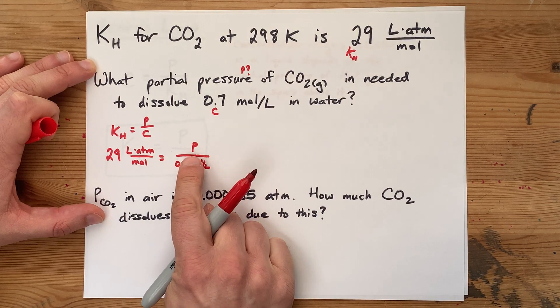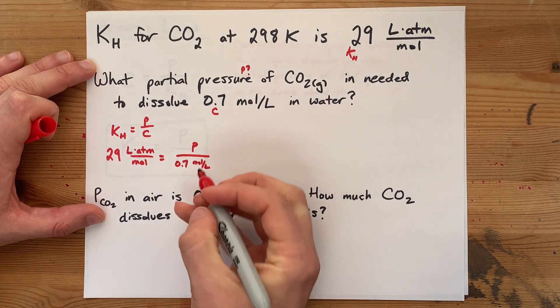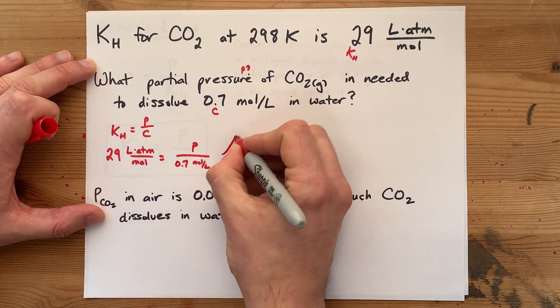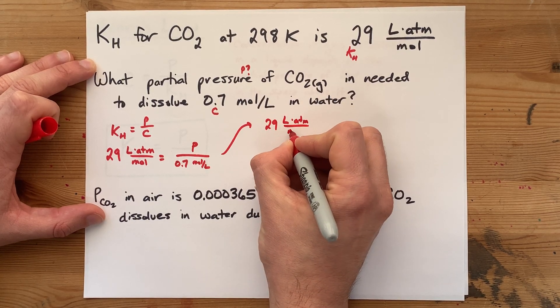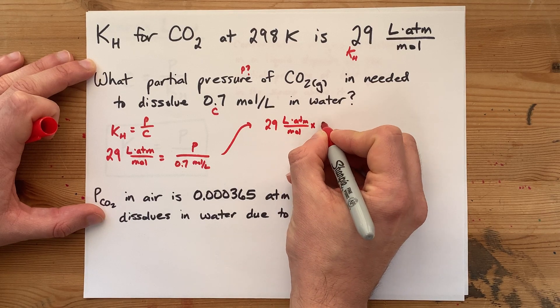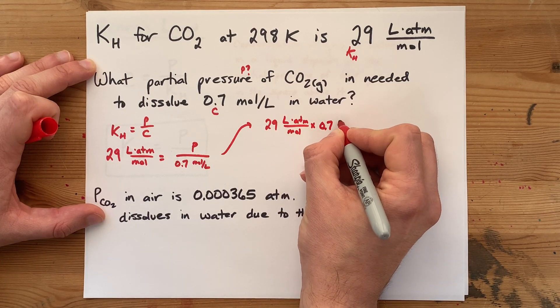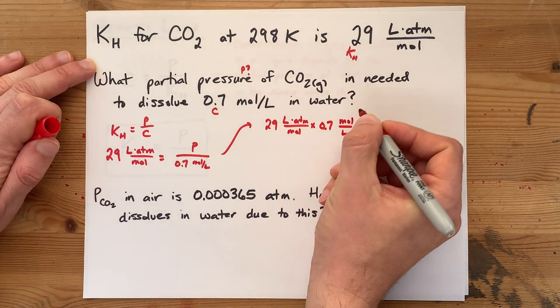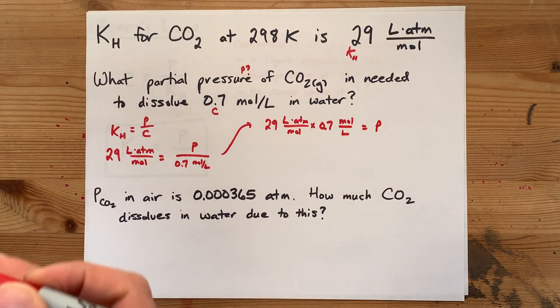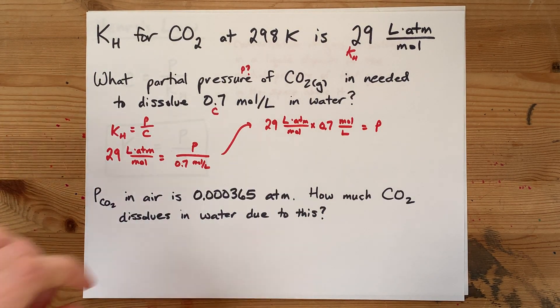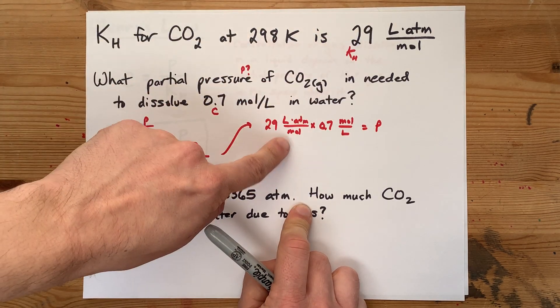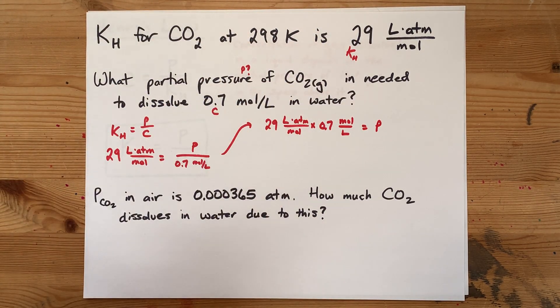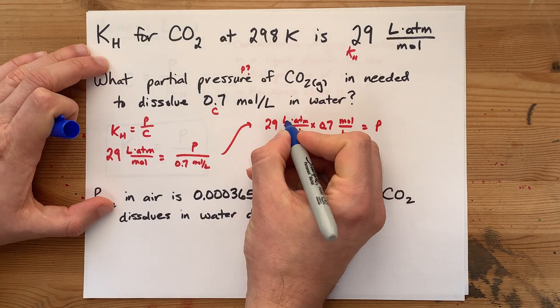In order to solve for P, we have to multiply both sides by 0.7. That's 29 liters atmospheres per mole, and we're going to multiply it by 0.7, and that's in moles per liter. Take a look at how the units end up canceling here. The liters per mole from the KH cancels with the moles per liter concentration that we're multiplying by.